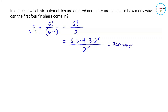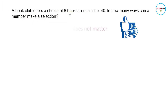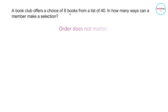Next problem: a book club offers a choice of eight books from a list of 40. In how many ways can a member make a selection? There is no mention of arranging the books, so we are just choosing eight from 40. Since order does not matter, this is a problem on combination.